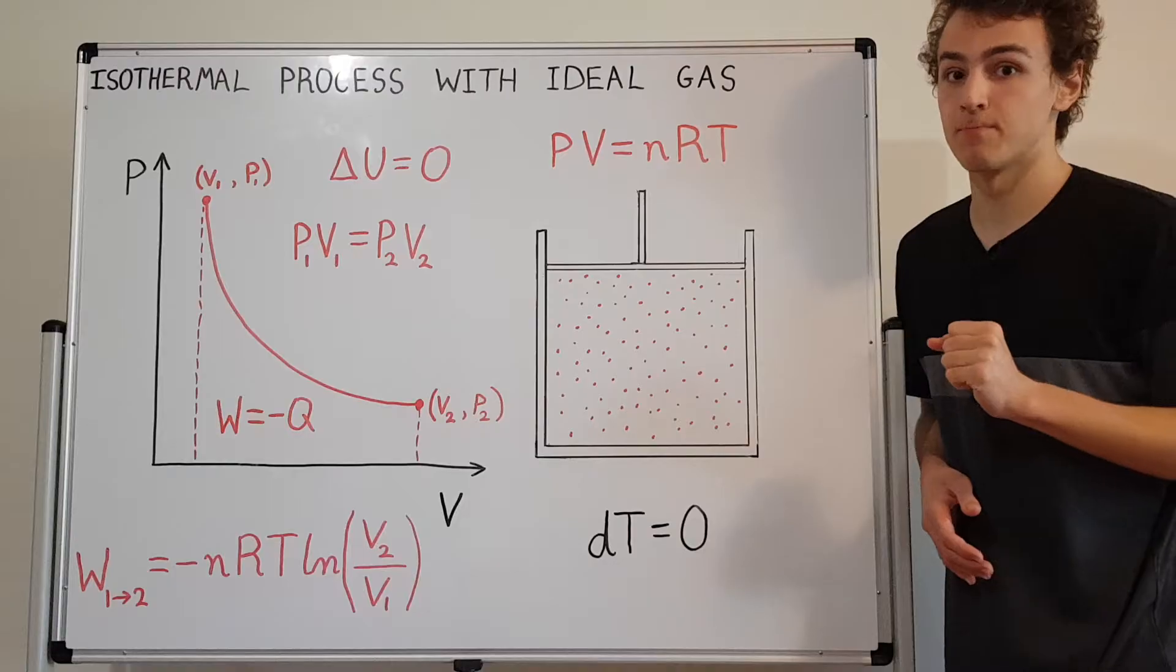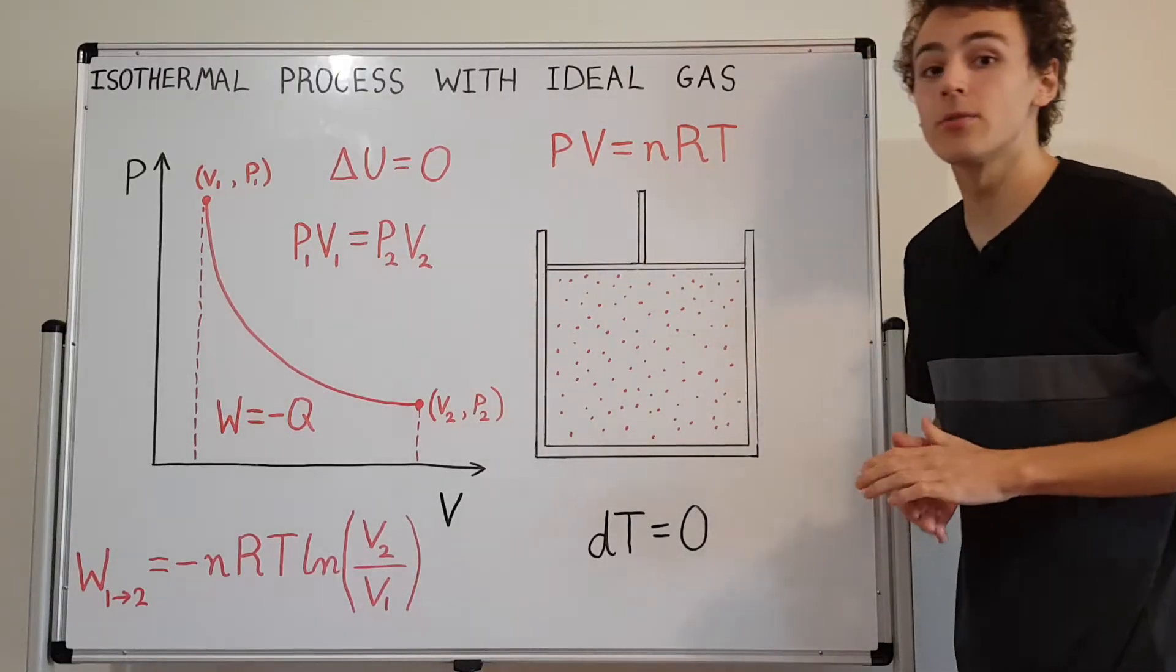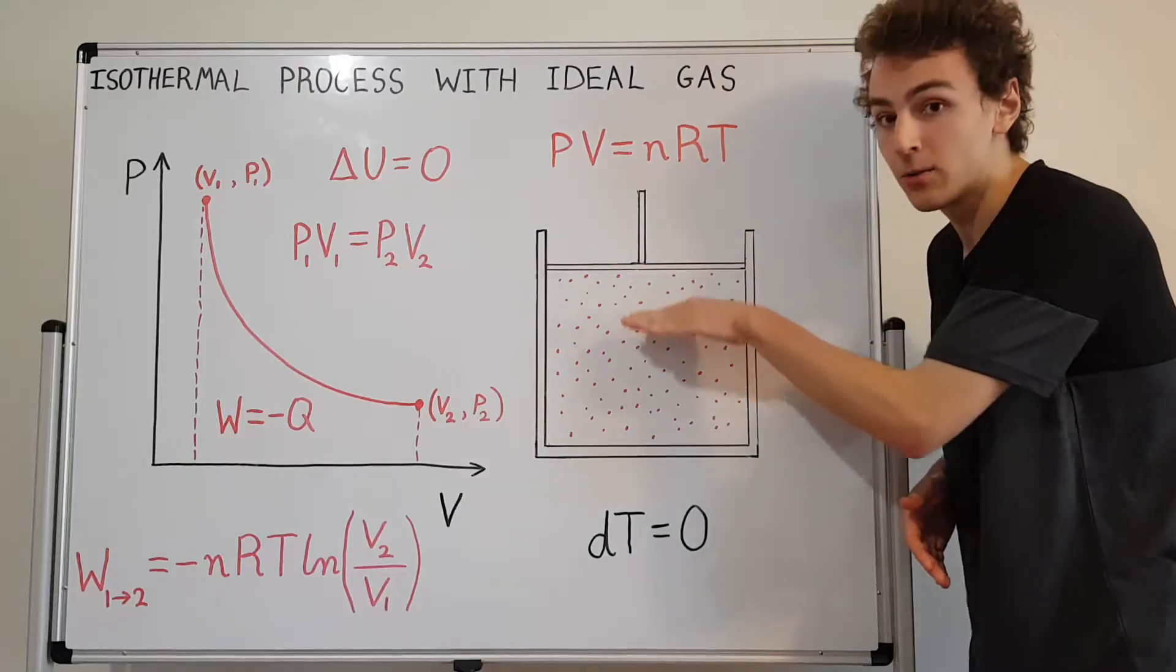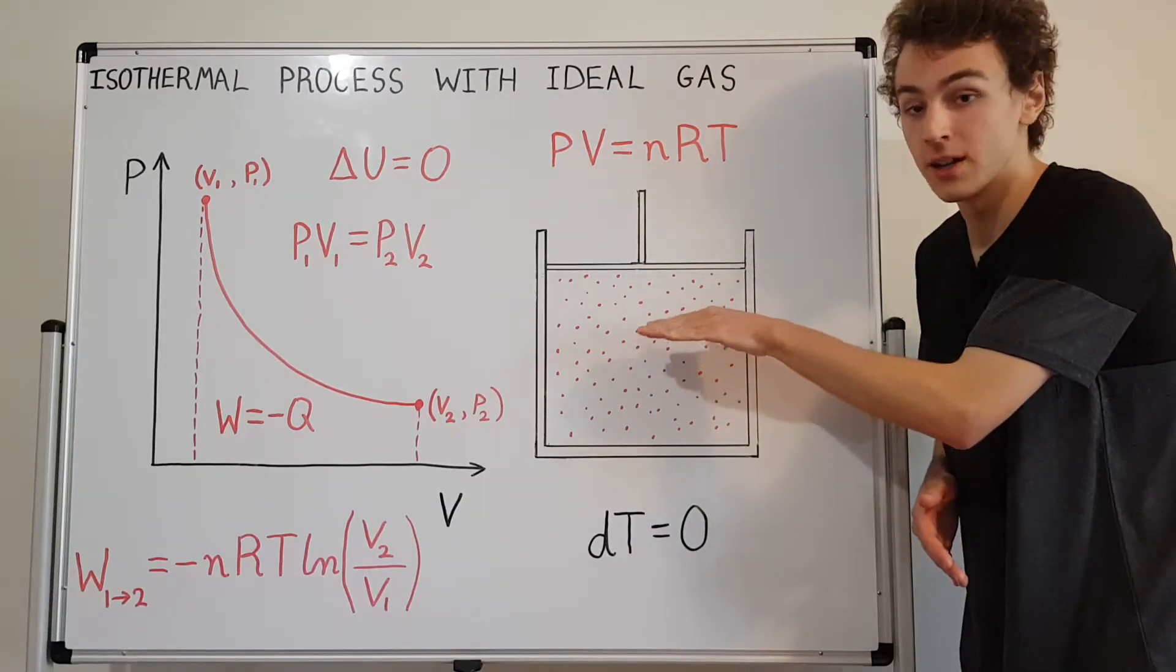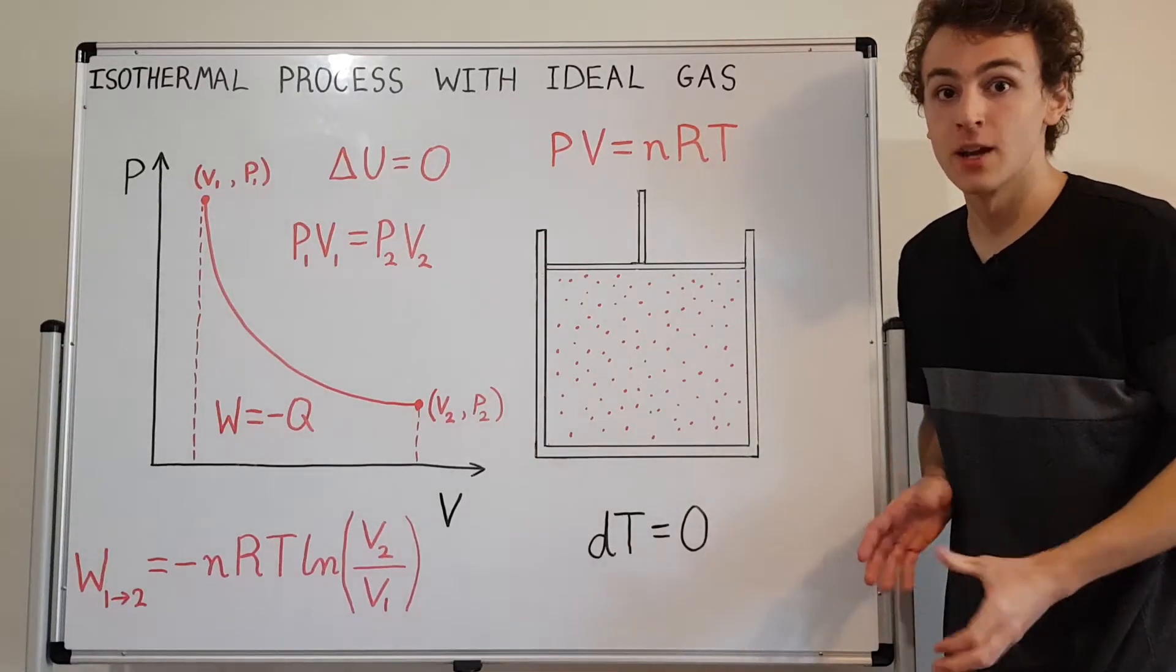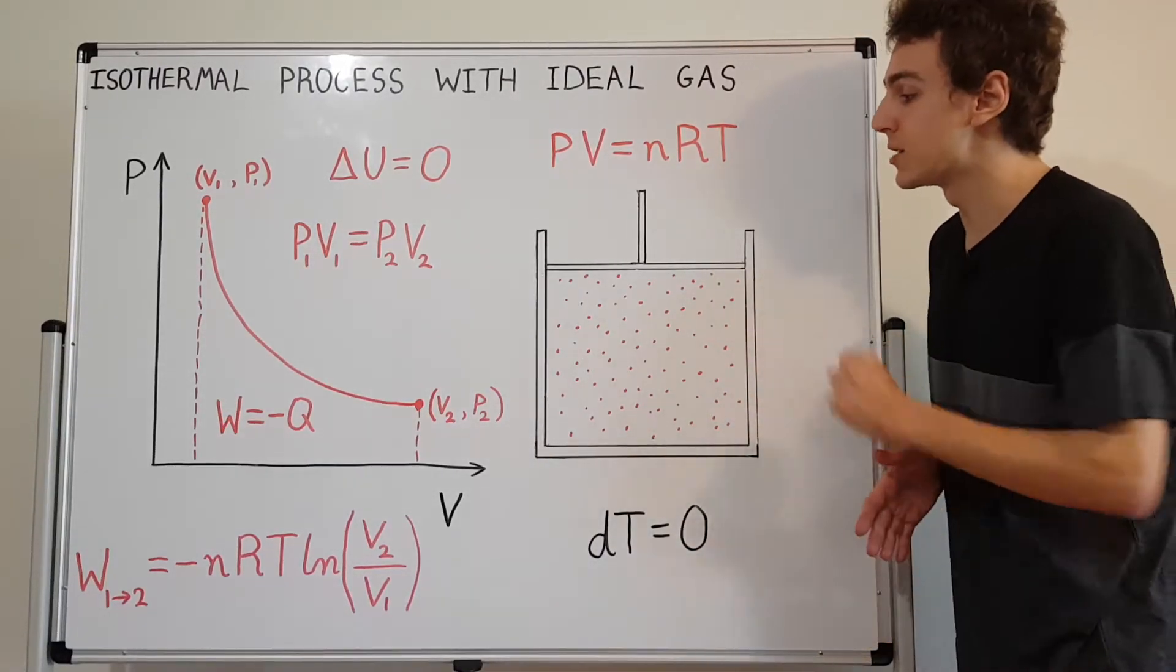P and V, they are free to change. So work can actually occur. The piston can move down during isothermal compression and the piston can move up during isothermal expansion. Those are the two types of processes we can do with this system.